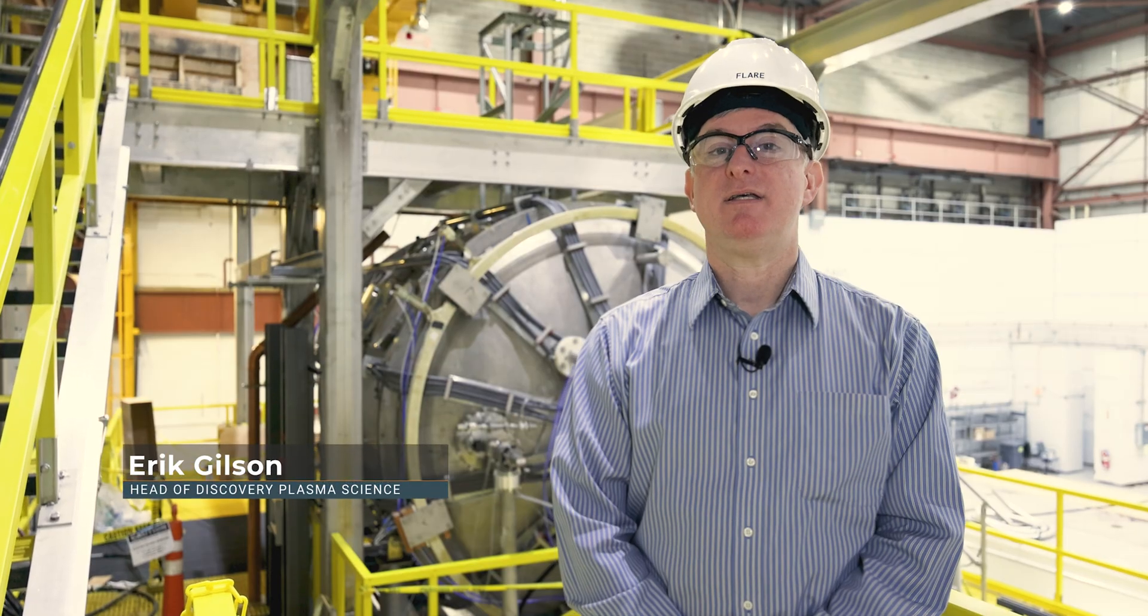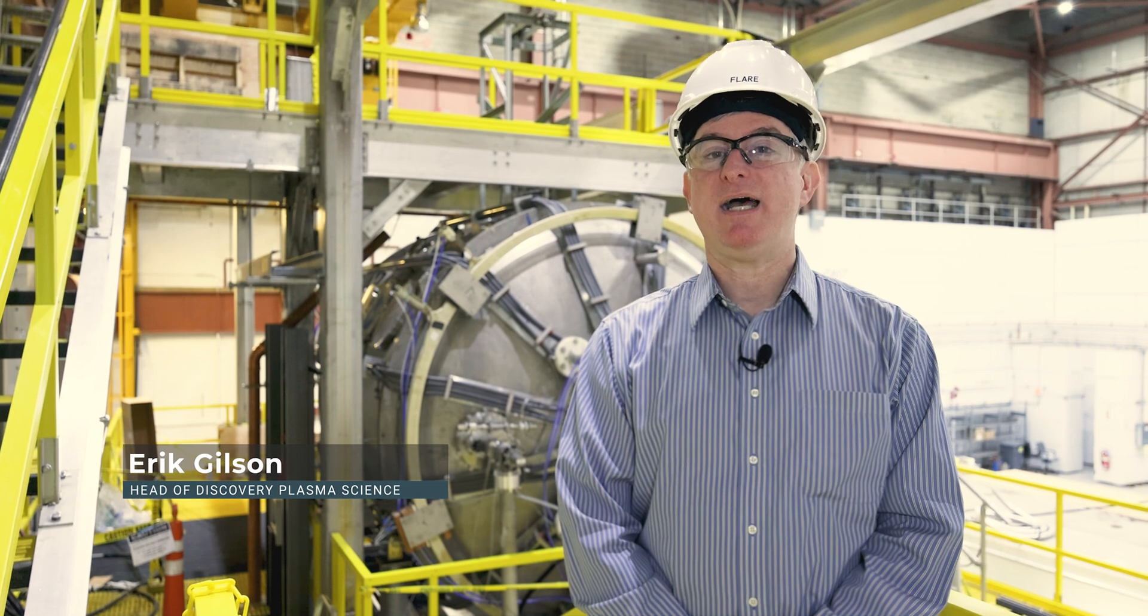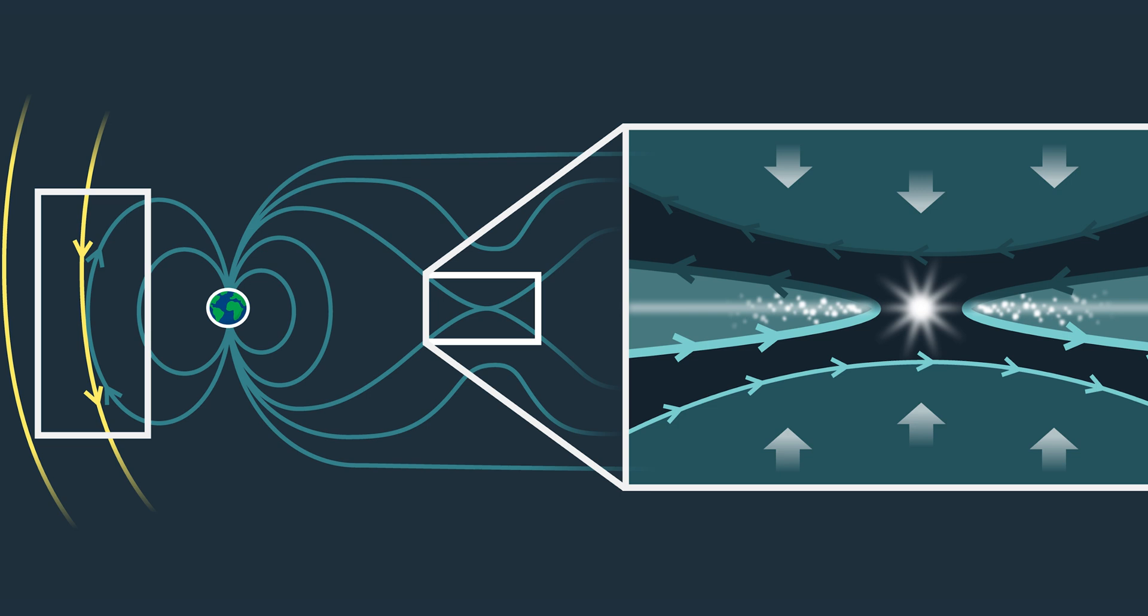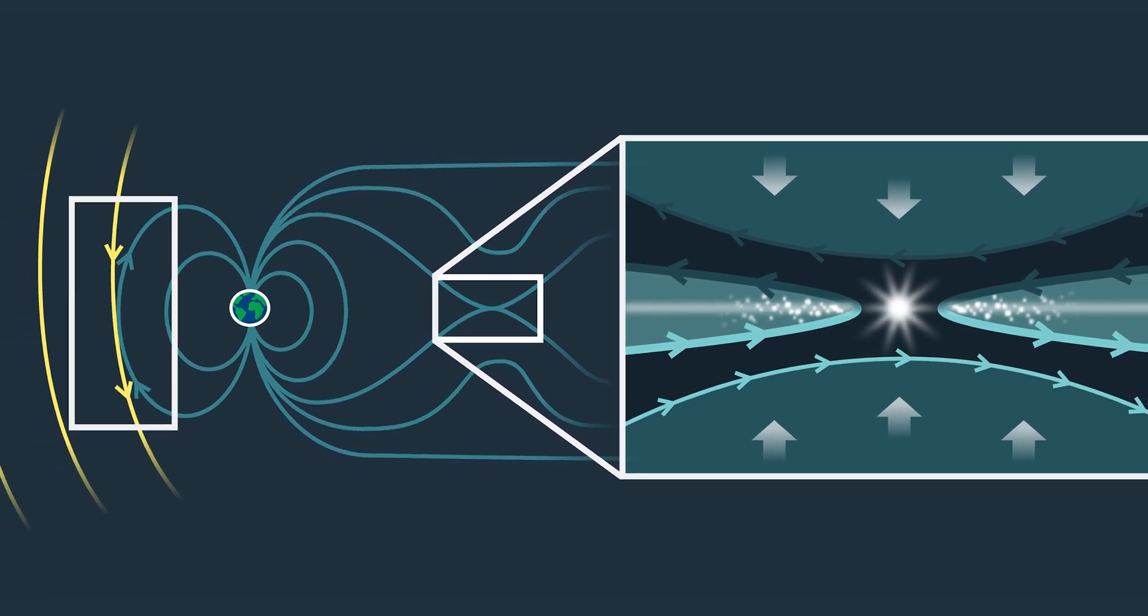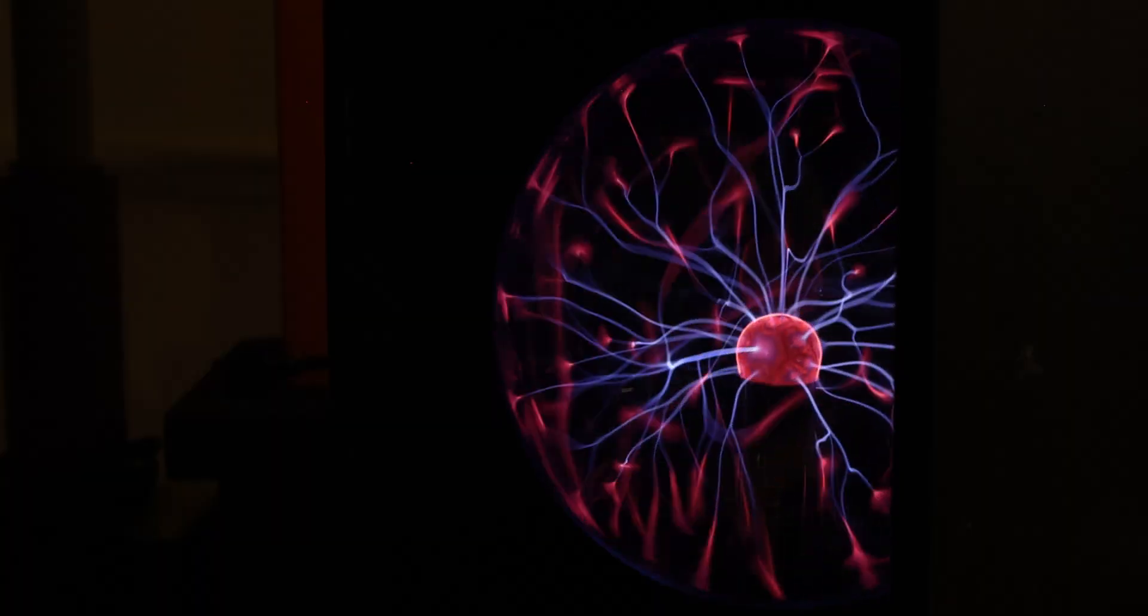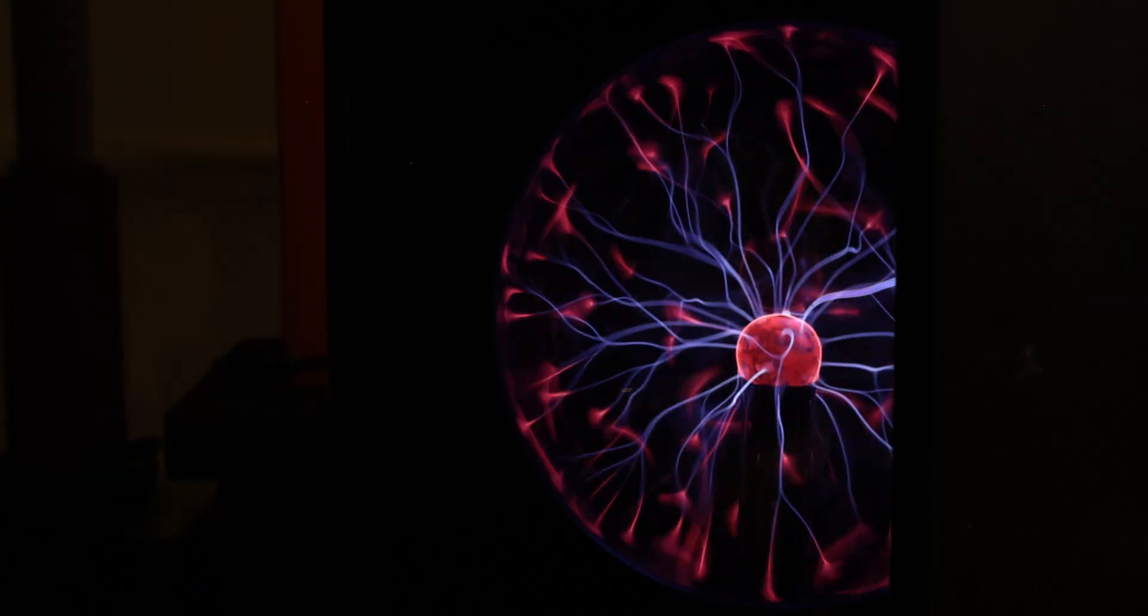Magnetic reconnection is about how magnetic field lines break and come back together. Magnetic field lines can get carried along by conductive fluids or conductive media, something like a liquid metal or a plasma, something that's fluid-like but also conducts electricity.